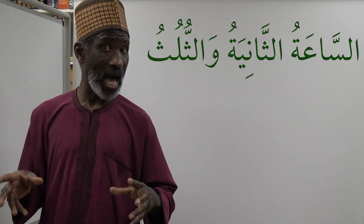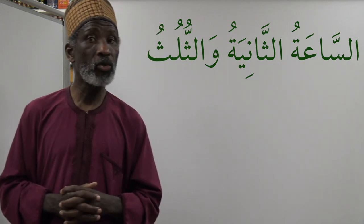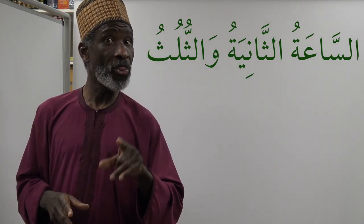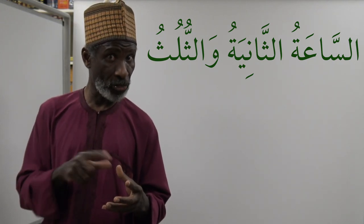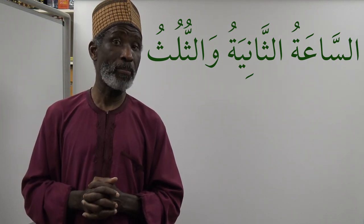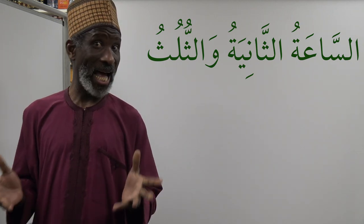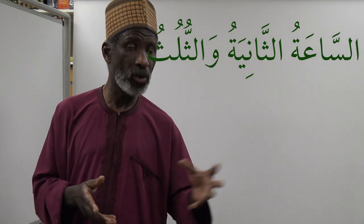Now, 'thuluth' means a third. In telling time, that means twenty minutes, because sixty divided by three equals twenty. So you can say 'assa'atu al thaniyatu wa thuluth' — that means 'twenty minutes past two.' For a quarter past — 'rubwa' — that's the equivalent of fifteen minutes past the hour. So 'quarter past seven in the morning' is 'assa'atu al sabi'atu wa rubwa sobahan.'